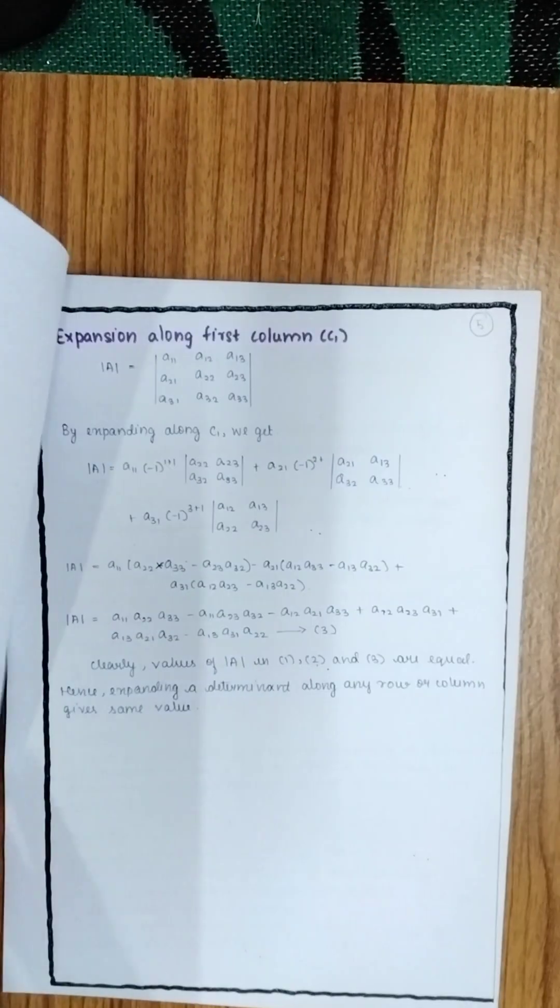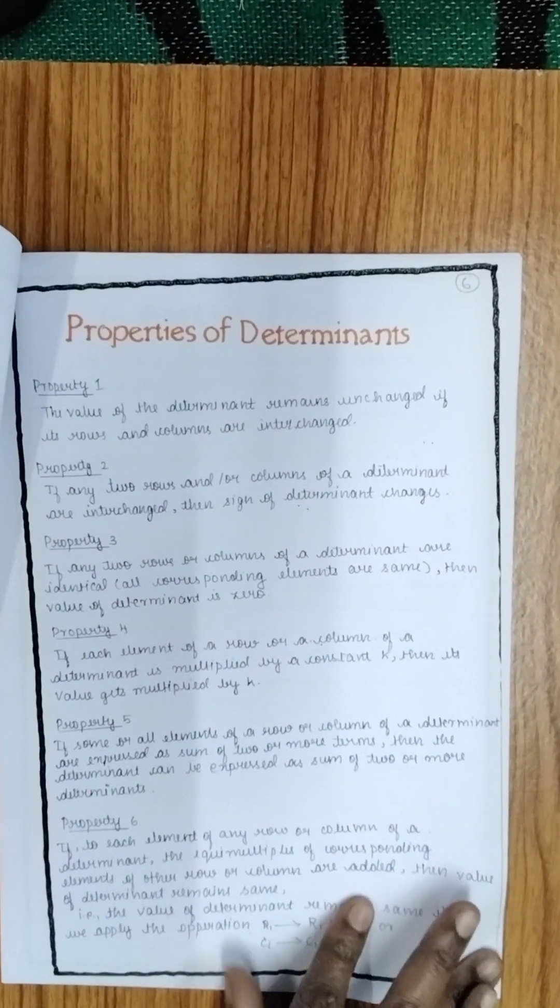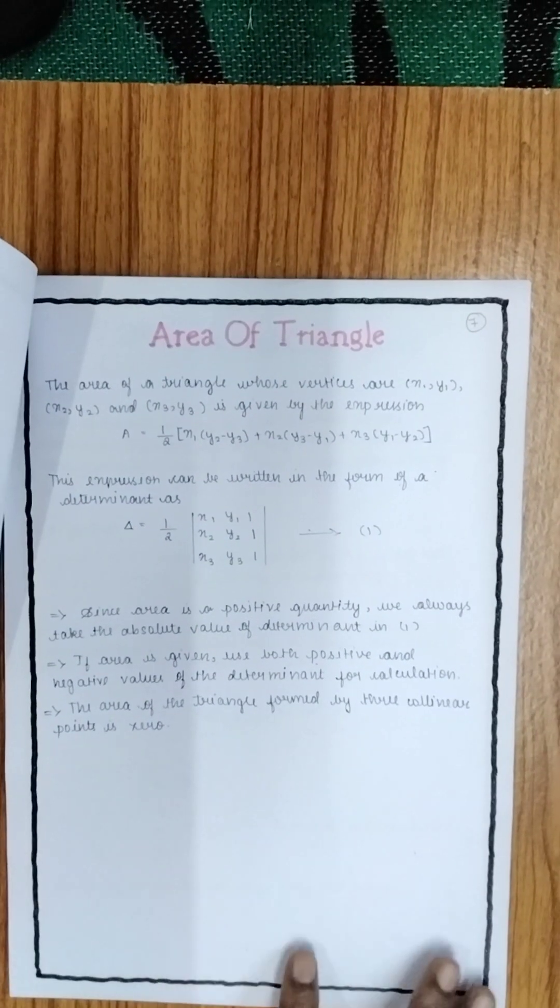Similarly, how will you expand it along row 2? That is being explained on the 5th page. Then on the next page are given properties of determinants. Six properties are being explained.